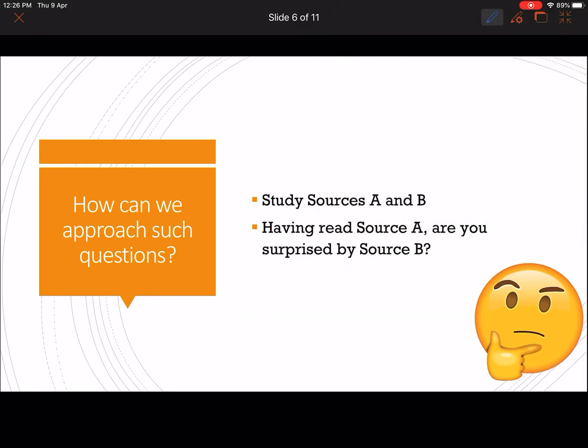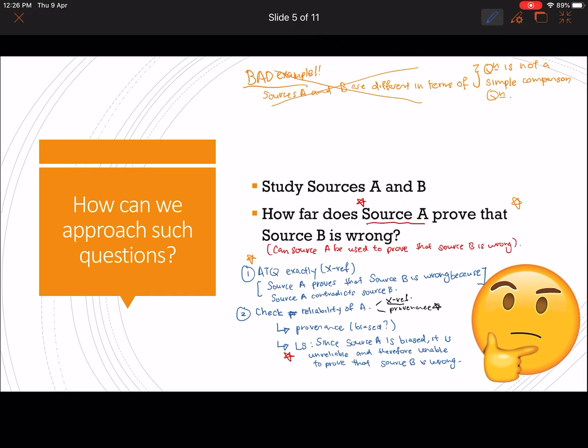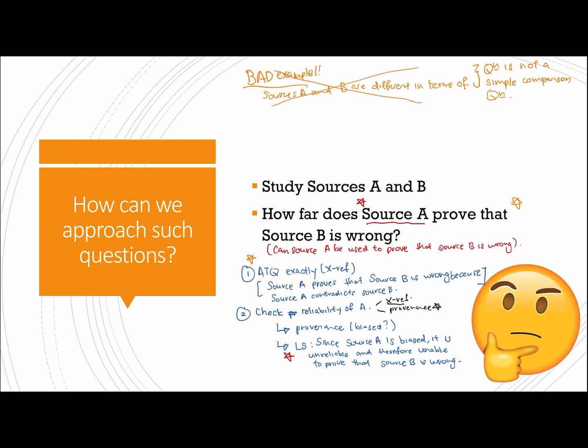Then some of you might be wondering now, source B don't have to check the reliability? So for this question, what is so special is that it doesn't really matter whether source B is wrong or not, because the focus of this question is not on B. Because our focus of this question is actually on source A.